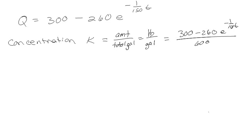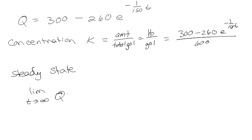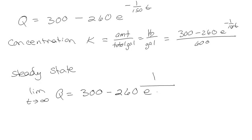More importantly, the problem asked us specifically: what is the steady state? We find the limit of Q as T approaches infinity. The 300 stays the same; the term 260·e^(-t/150) goes to 0 as t goes to infinity, because we're dividing by a negative exponent going to infinity. So the steady state is 300.